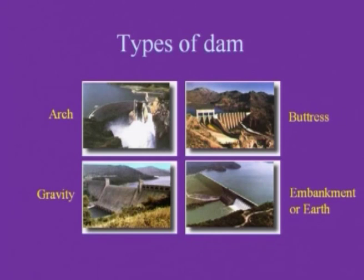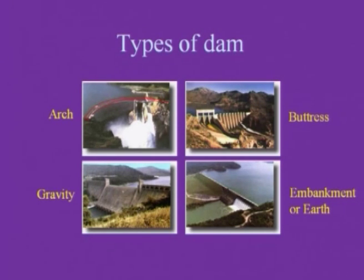An example of an arch dam from Switzerland shows a very thin thickness characteristic of the arch type. The gravity dam resists forces by means of its own weight. An earthen dam and a buttress dam are also shown — all these dam types have been previously discussed.